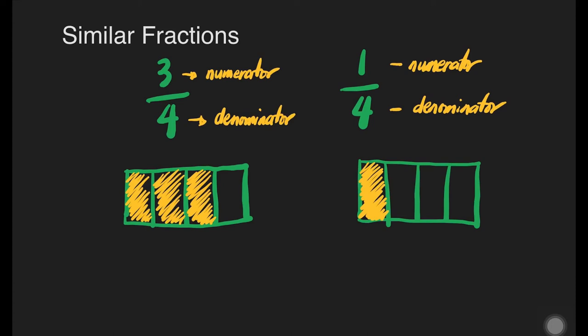How about dissimilar fractions? These fractions having different denominator. We can say that 4 fifths and 2 thirds are dissimilar fractions. Why? Because they have different denominators.